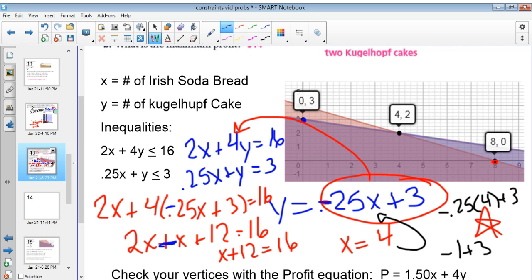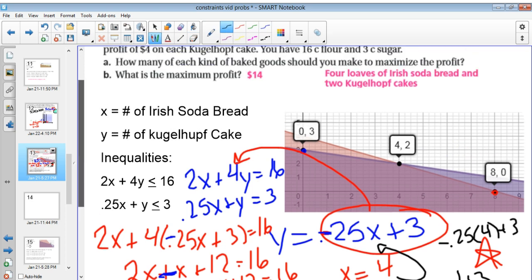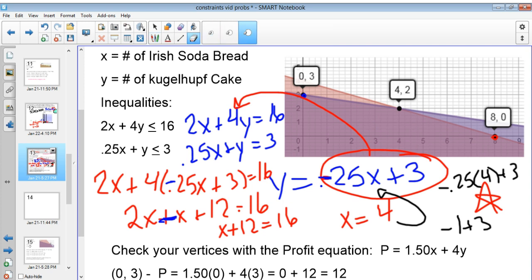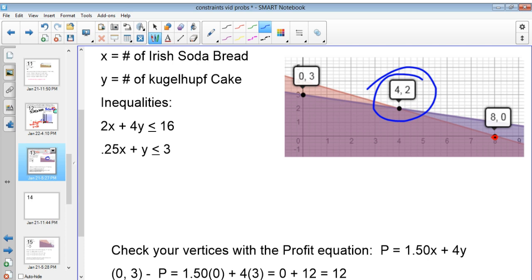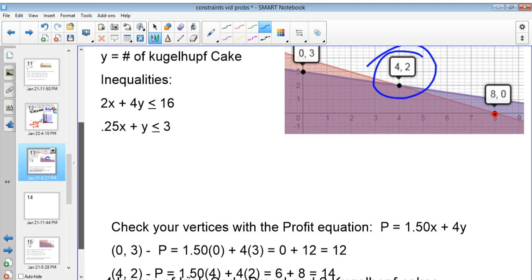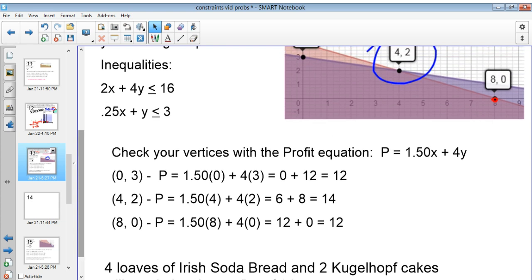If we weren't sure already that that would be the solution, because we kind of have these four solutions, I can already with this profit function, I already know that I'm kind of already going to be guessing that this is going to be our best move. Because it has almost the most amount of Y's, and it also has a decent amount of X's. So kind of the top right point there. Checking out those vertices, though, we see that plugging them in, we find with the point 0 comma 3, or if we cook zero loaves of Irish soda bread and three loaves of the Kugelhopf, we'd get $12. If it was 4 and 2, we'd get $14. And if we use the 8 and 0, we would also get $12. So our best deal is four loaves of Irish soda bread and two Kugelhopf cakes to maximize a profit of $14.